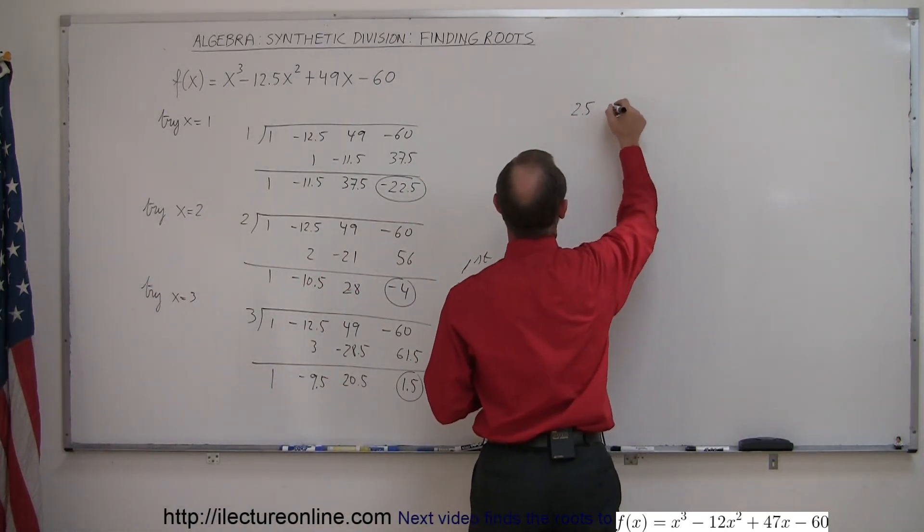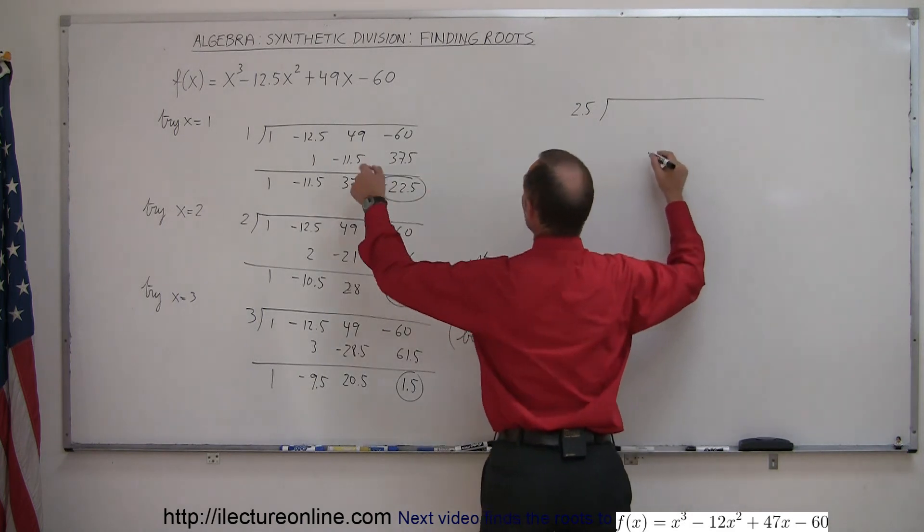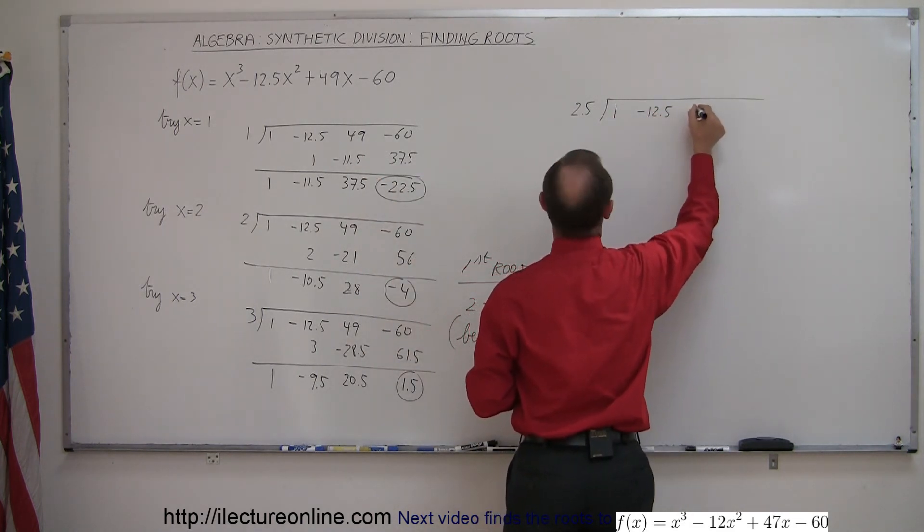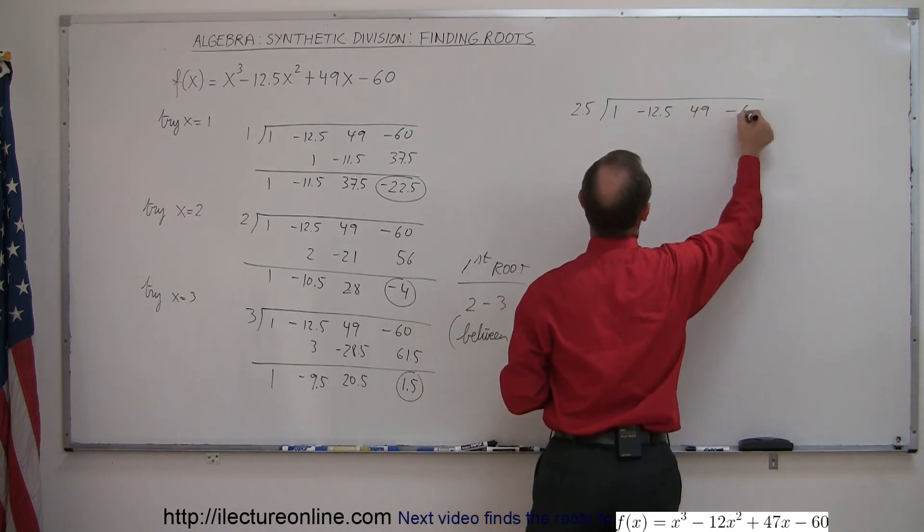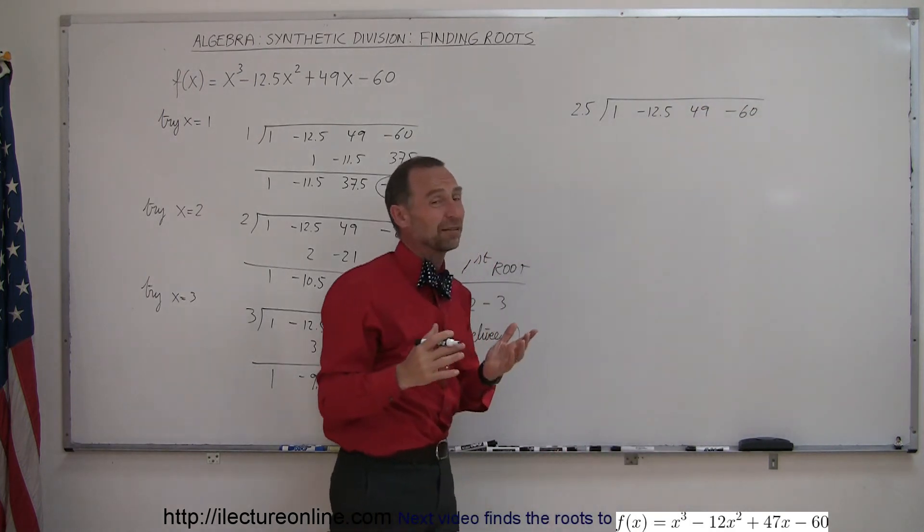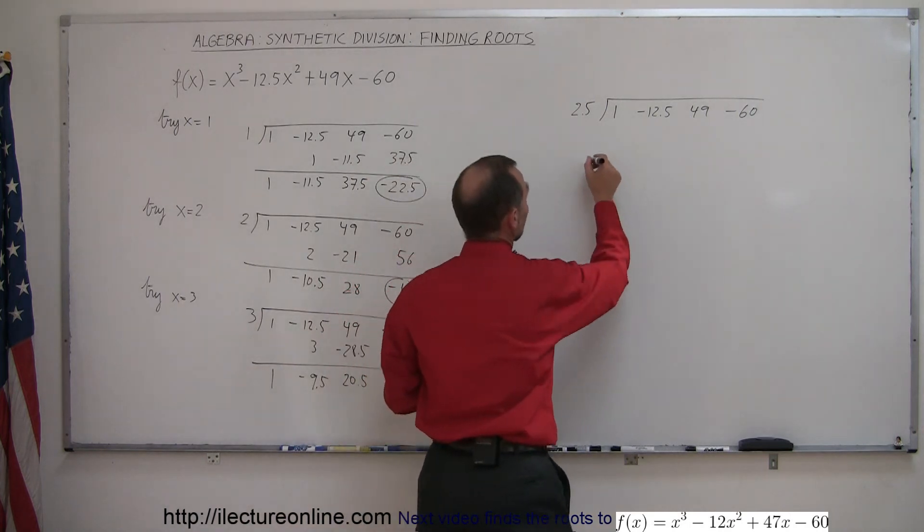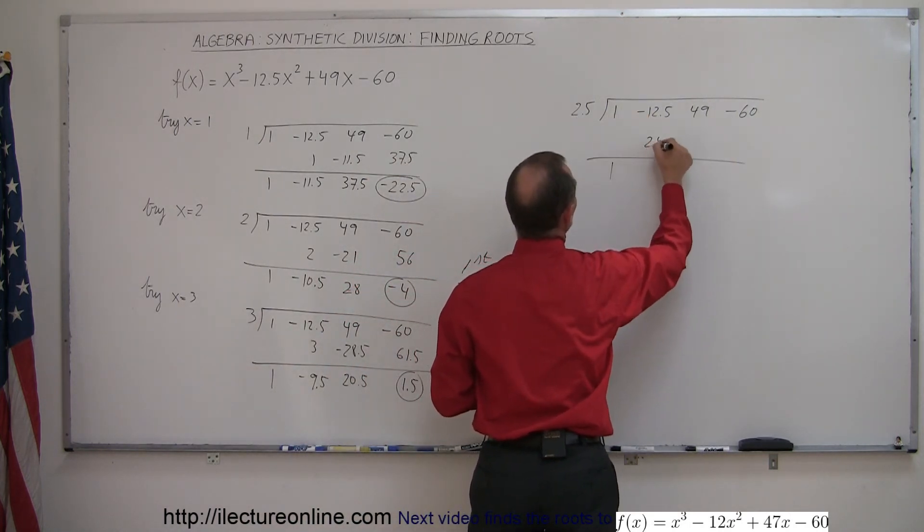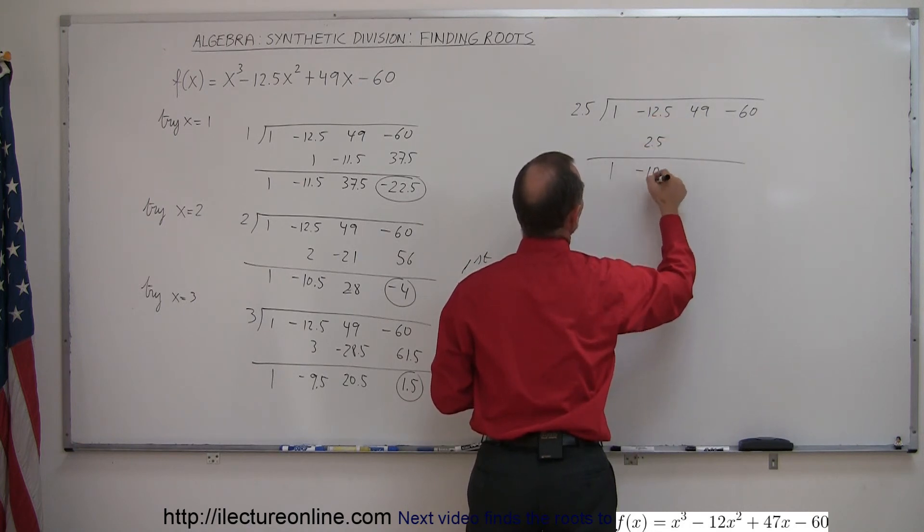So 2.5. Again, we have to put down our coefficients: 1, minus 12.5, 49, and minus 60. At this point, you may not find the root, but at least you know how to get close. Drop down the 1, 1 times 2.5 is 2.5, add them together you get minus 10.